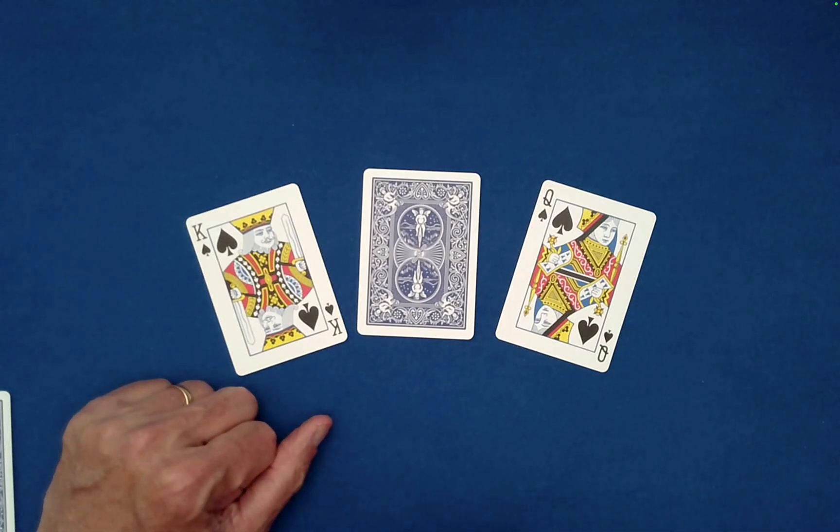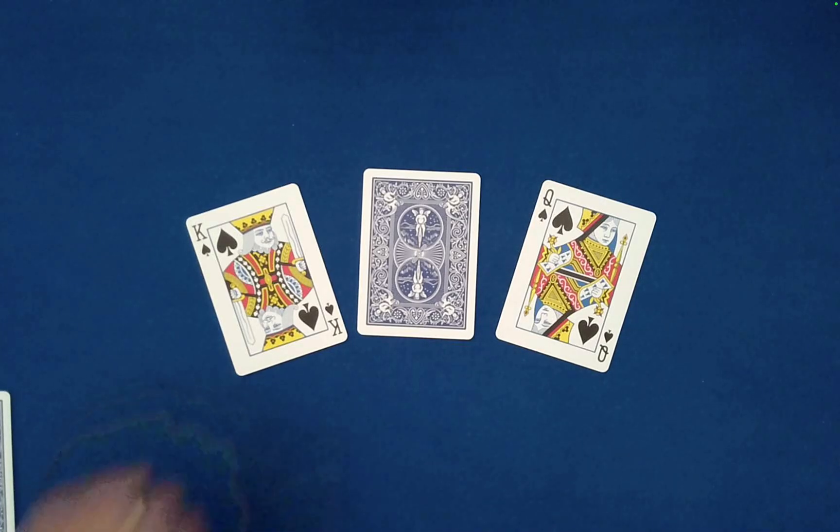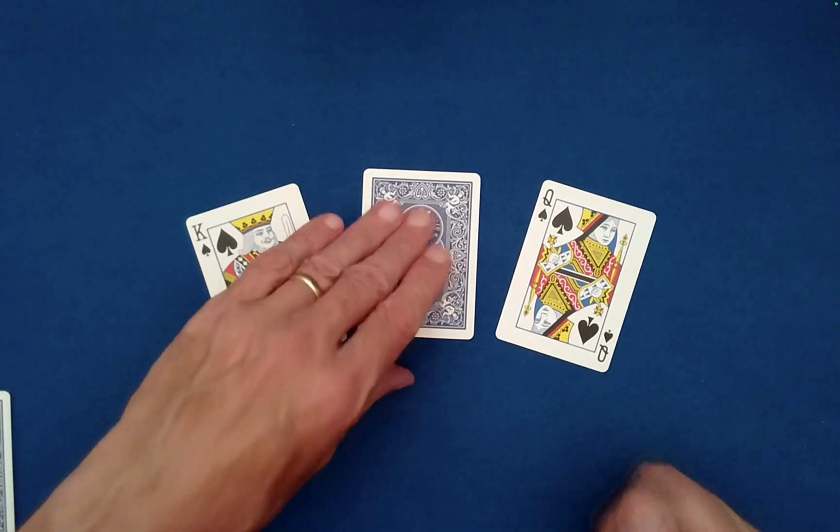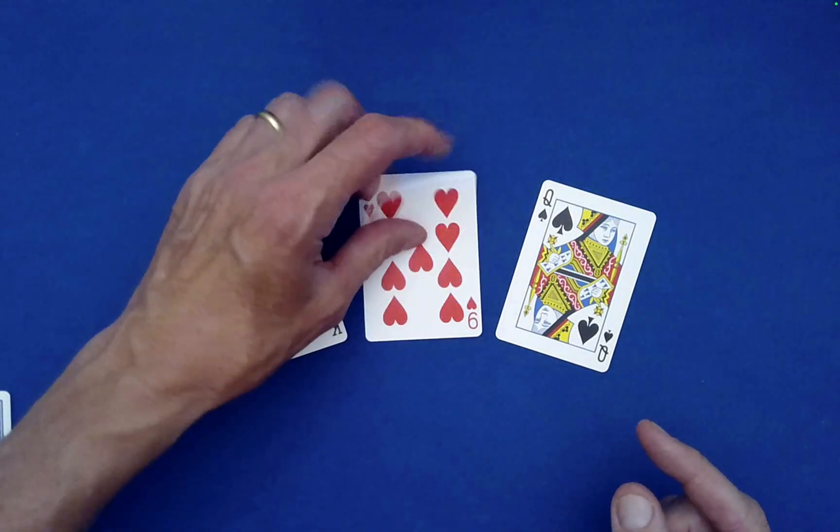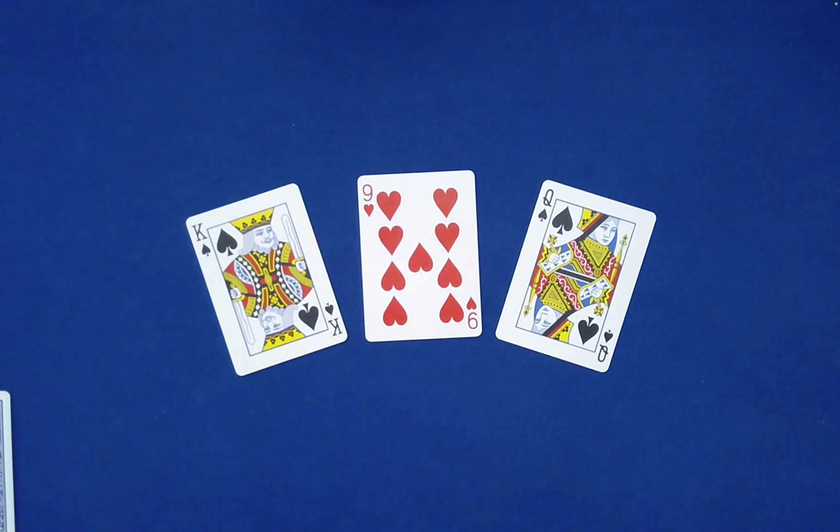So what was the card you claim you saw again? Oh yeah, it was the seven of clubs. Well, let's just take a look at whether or not that is actually true. So you say seven of clubs? I don't think so. It's the nine of hearts. That is the card that you actually saw. And the truth was revealed to us by the king and queen of spades.